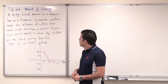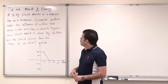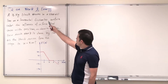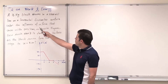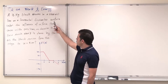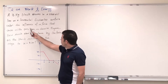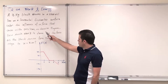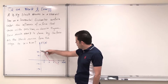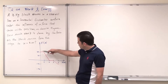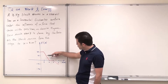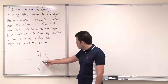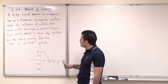Assalamu alaikum. This is a question on work and energy. A three kilogram block moves in a straight line on a horizontal frictionless surface under the influence of a force that varies with position. This force doesn't have a constant value over the position from zero meters to eight meters.